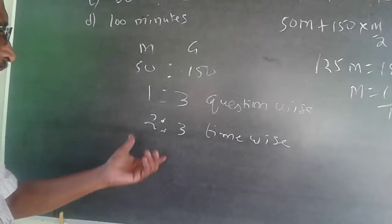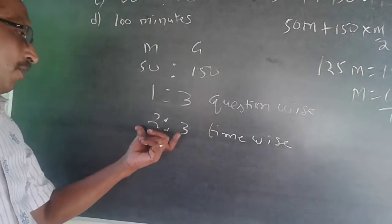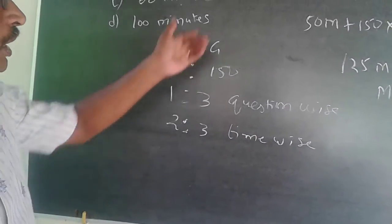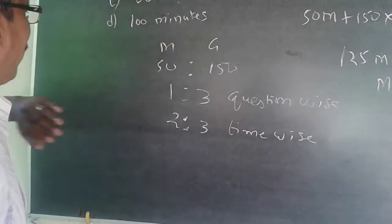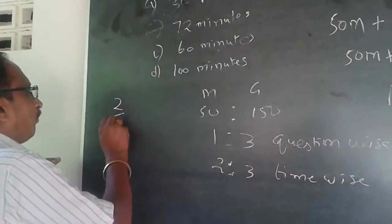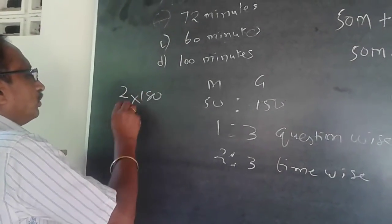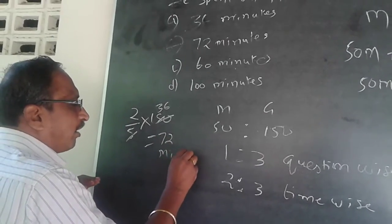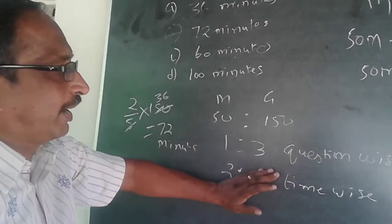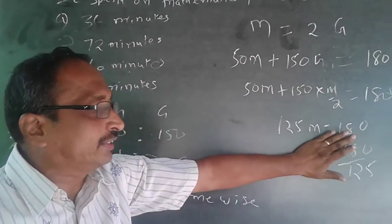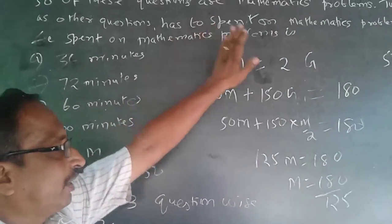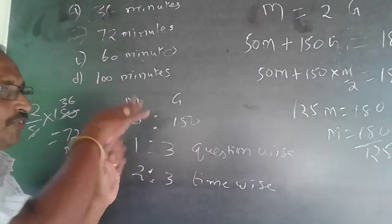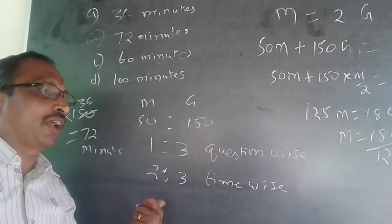Now the proportion comes in: out of 5 total time parts, 2 will be for math. Total time is 180 minutes, so total math time = (2/5) × 180 = 72 minutes. This is the easier way — the moment you understand that the ratio is 1:3 question-wise and 2:3 time-wise, you directly compute 2/5 of 180 as your answer.